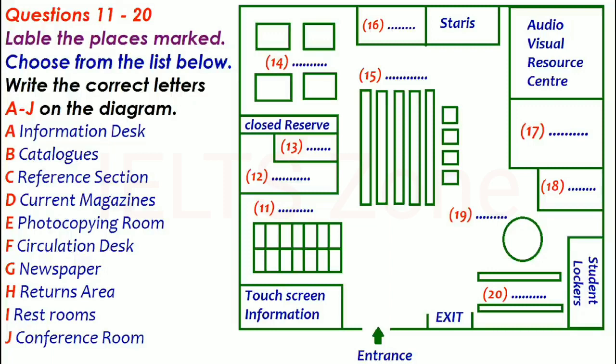These computers can be used at any time to get general information about the library and how it works. In front of the touchscreen information service are the catalogues. It's a computerised catalogue system and it's very easy to use. The catalogues are linked up to the other libraries at the university, so make sure you check which library a book is in when you are trying to locate a particular item.